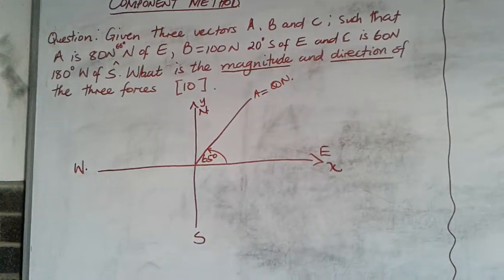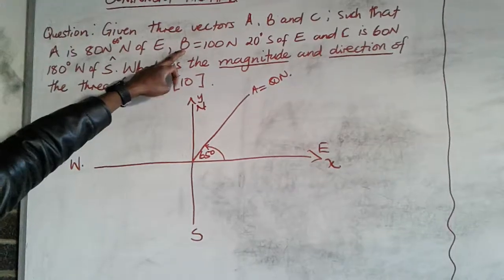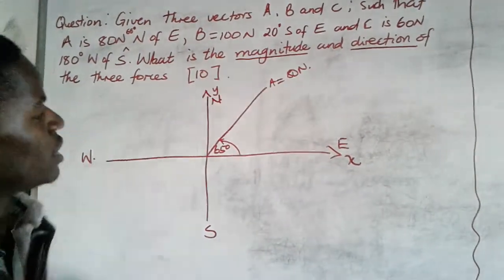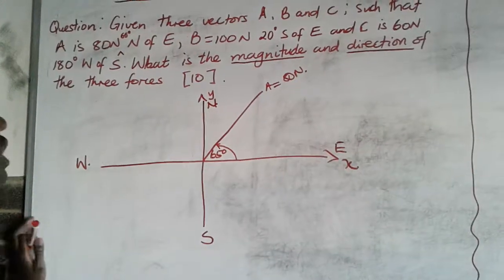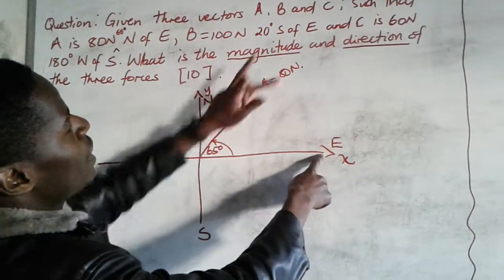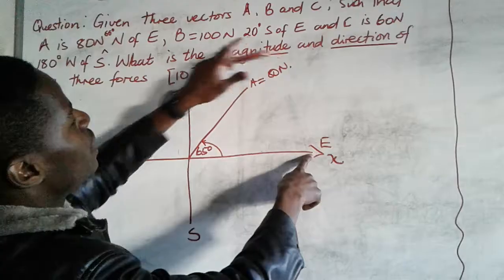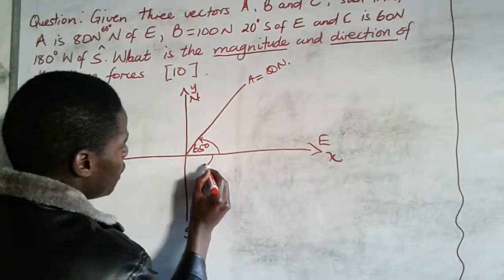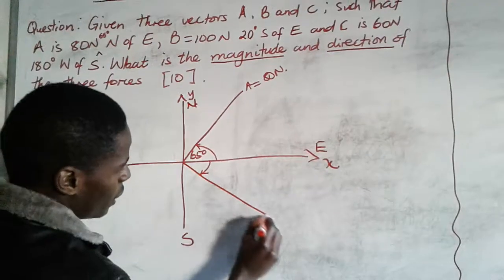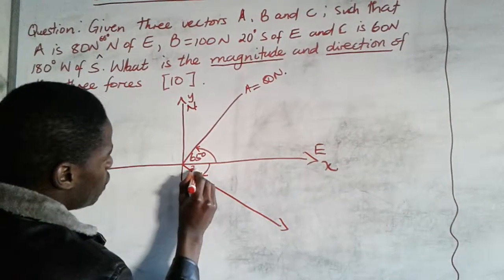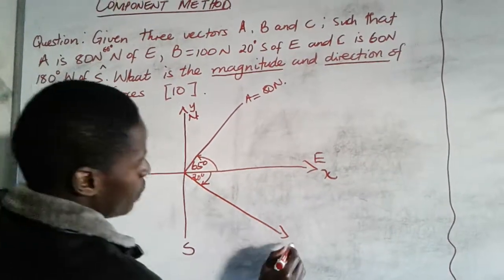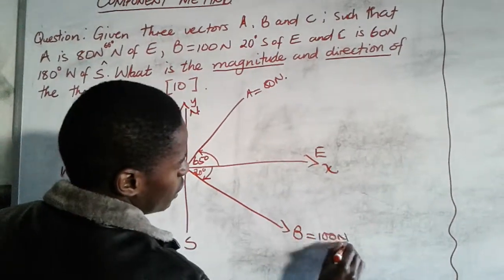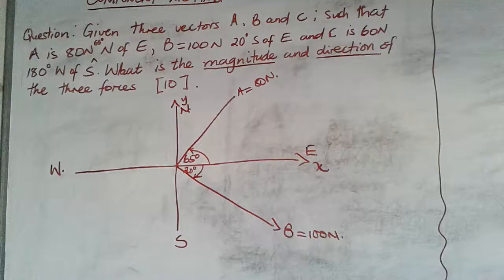We also have force B, which is 100 newtons at 20 degrees south of east. That means you start at east and go 20 degrees towards the south. So this angle here is 20 degrees, and this arrow represents force B, which is equal to 100 newtons.